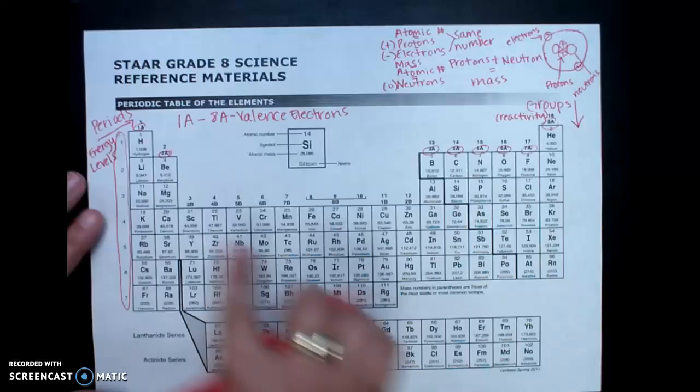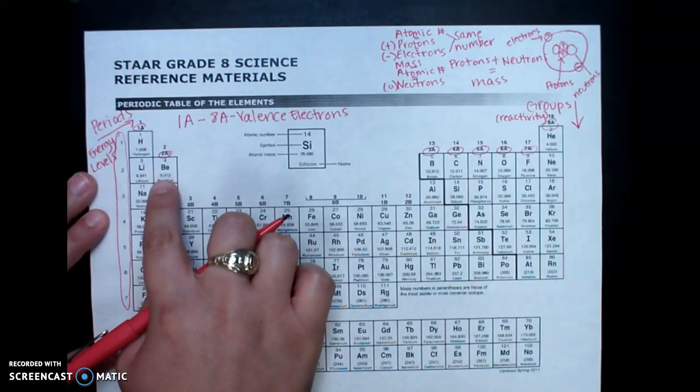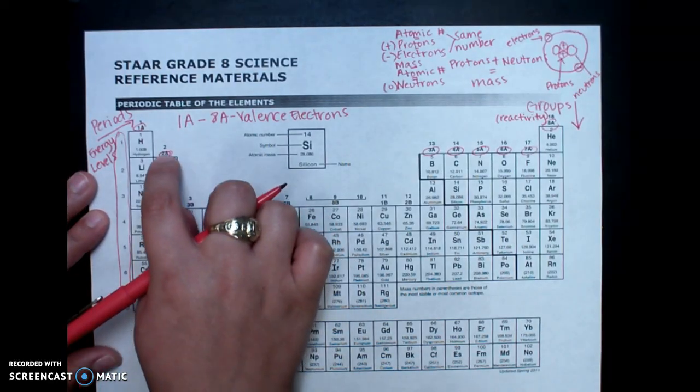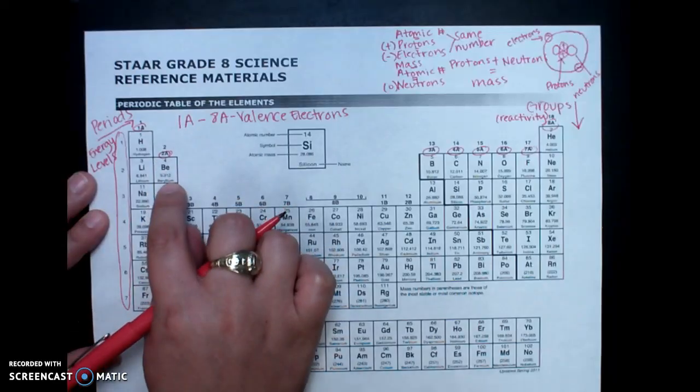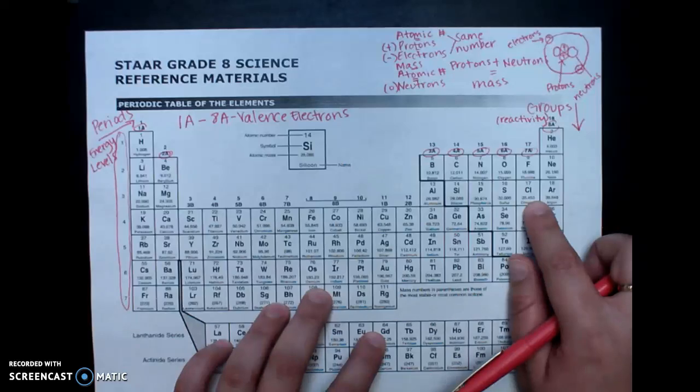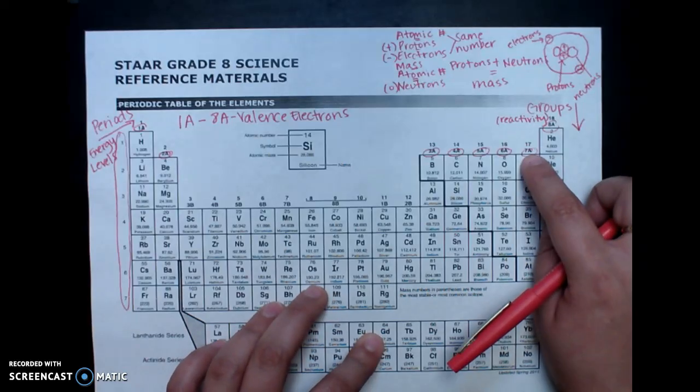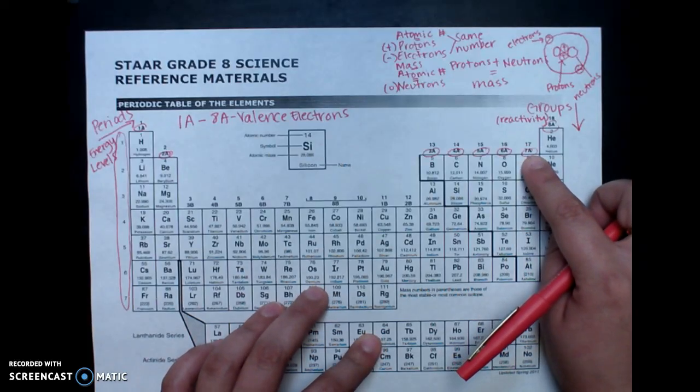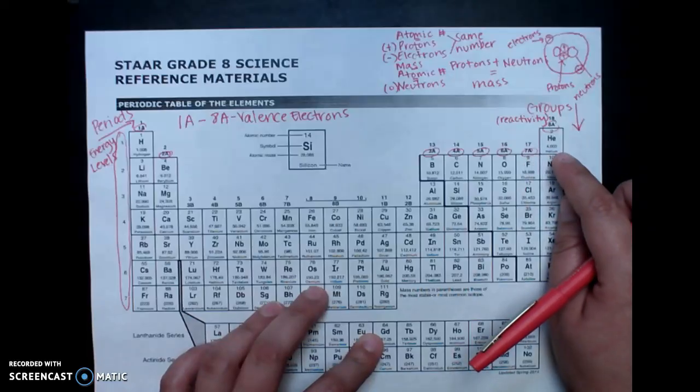So, for example, if we come over here. For example, beryllium is in 2, group 2, or 2a. So it has two valence electrons. If we come over here to chlorine. Chlorine is in group 17, or 7a. So it has seven valence electrons. Meaning it has seven electrons on its outermost shell.